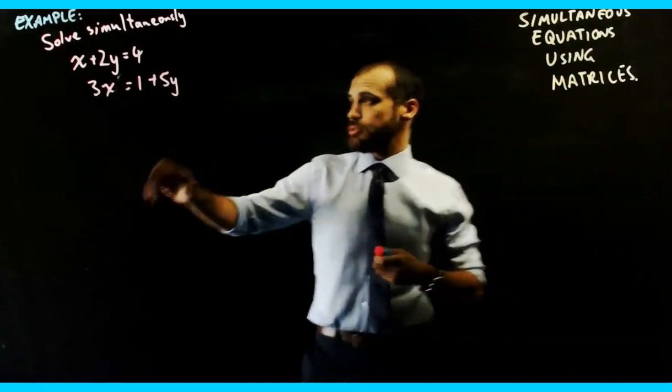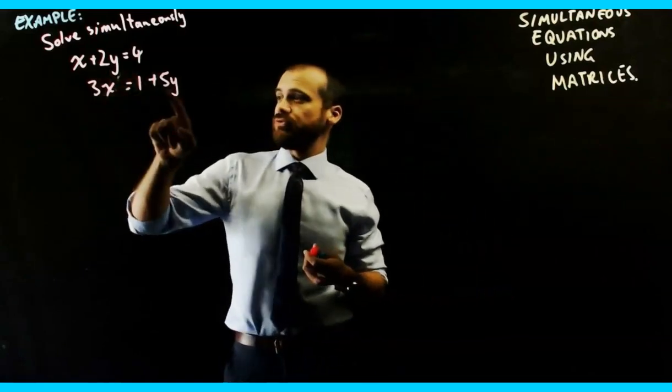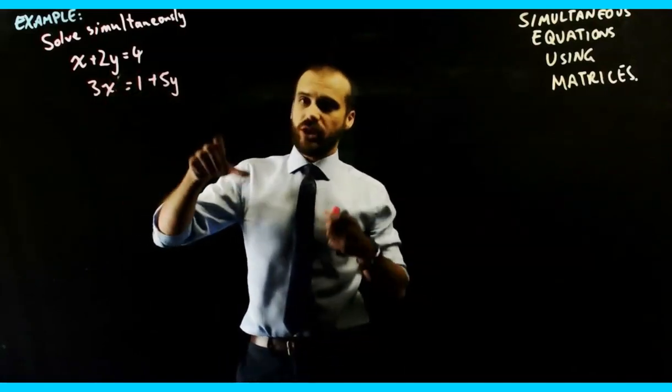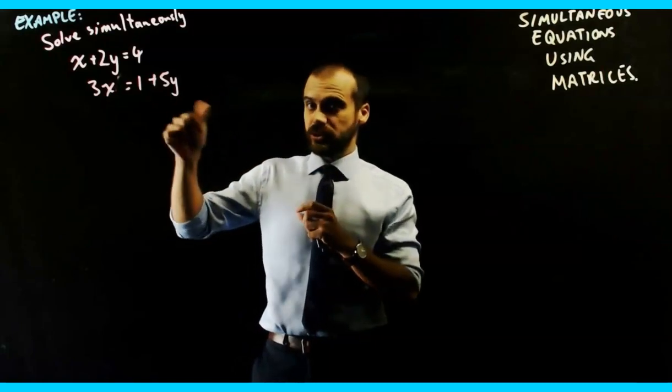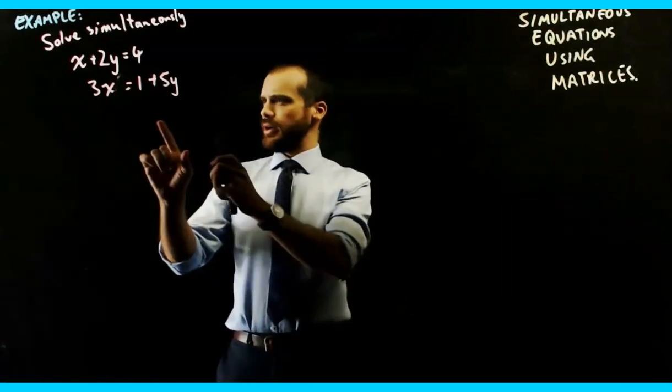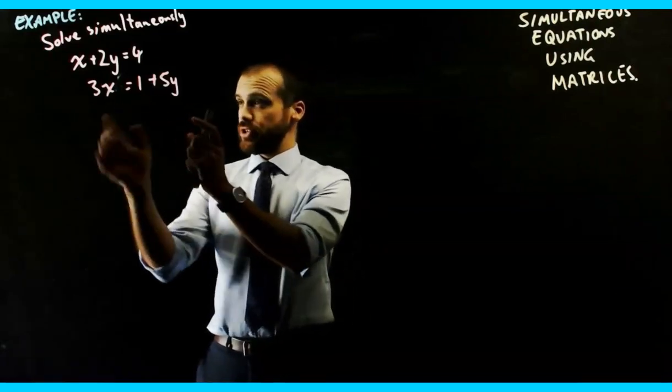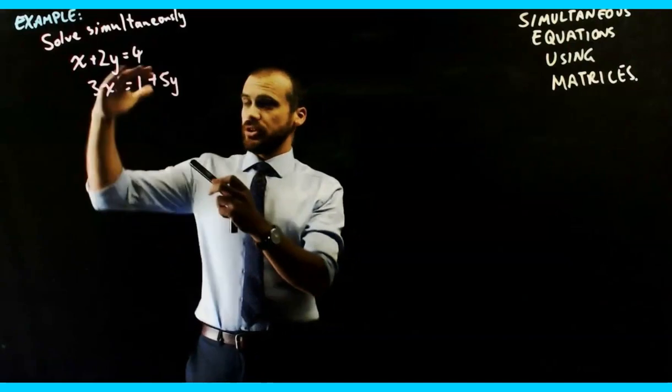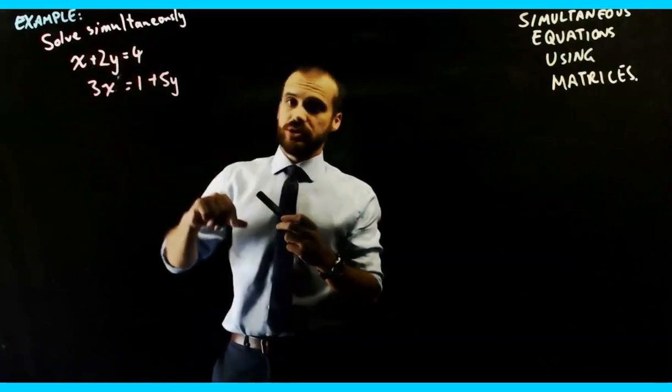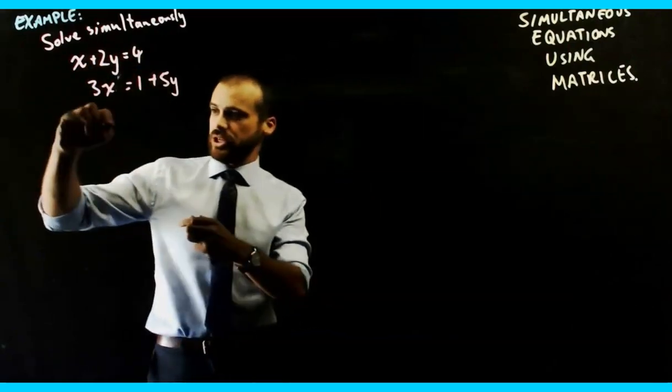I'm going to jump straight into this one. x plus 2y equals 4 and 3x equals 1 plus 5y. We're going to find the simultaneous equation to those two linear equations. Of note is we probably, as a first step, need to rearrange it so that the x's, the y's, and the constants are lined up, like we do for elimination.